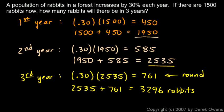3296 at the end of three years. One thing to note is that we started out with 1500, we ended with 3296. The rabbit population more than doubled in three years at a 30% growth rate, a fairly rapid increase in the amount of rabbits. And I'm actually not a biologist. I don't know exactly how fast rabbits multiply, and it's different for different types of rabbits no doubt.